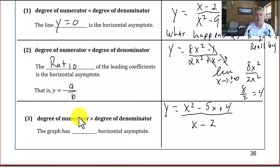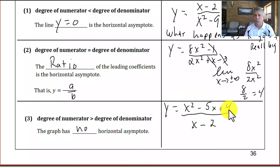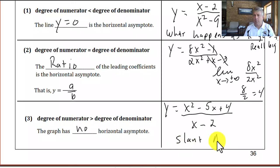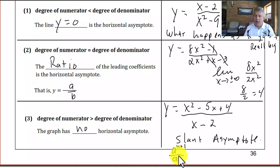If the degree of the numerator is greater than the degree of the denominator, the graph does not have a horizontal asymptote — the numerator approaches infinity, so the fraction goes toward infinity. However, if the numerator is only one degree higher than the denominator, we get what's called a slant asymptote. So when the numerator's degree is exactly one more than the denominator's, we have a slant asymptote rather than a horizontal one.